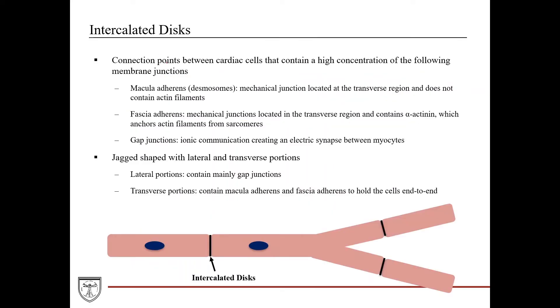So intercalated discs, like we mentioned before, they're connection points between cardiac cells containing a high concentration of the following membrane junctions. So you have macula adherens, also known as desmosomes. These are a mechanical junction. They're located in the transverse region of the intercalated disc. We'll talk about what that means in a second. And they do not contain actin filaments. Fascia adherens, these are also mechanical junctions, also located in the transverse region. They contain alpha actin. Remember we talked about this back in the skeletal muscle lecture in regards to the sarcomere. These help anchor actin filaments from sarcomeres. Then lastly here, you have gap junctions, which are ionic communication, which create an electrical synapse between myocytes.